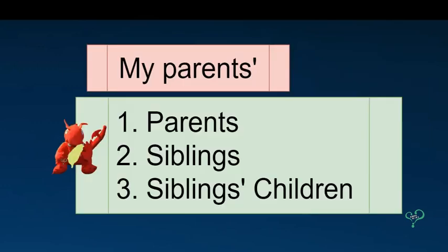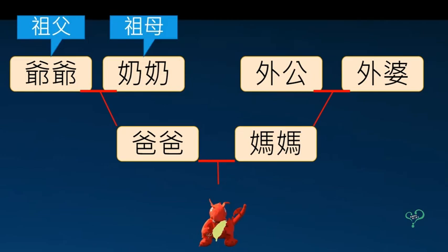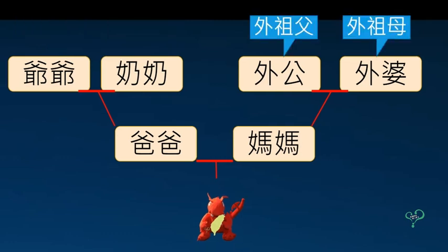Next, my parents' parents, siblings, and their children. I call my father's father 爺爺 and my father's mother 奶奶. But my mother's father, I call him 外公, and my mother's mother is my 外婆. You may also hear more formal names such as 祖父, 祖母, 外祖父, 外祖母.